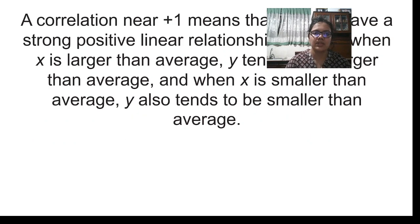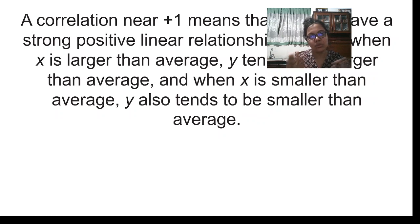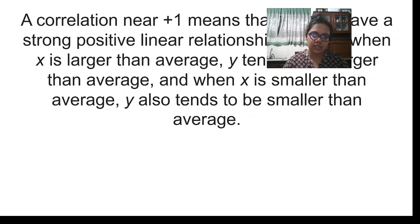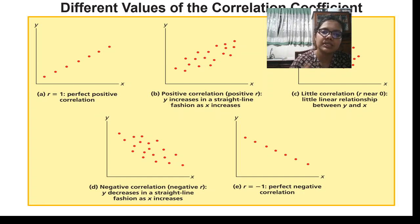Always the correlation coefficient has to be between minus one and plus one. A correlation near plus one means that X and Y have a strong positive relationship. If the value is more closer towards plus one, that means you have a positive linear relationship. If the value is more towards minus one, it means you have a negative linear relationship. Based on the value you are getting, you can determine what kind of relationship exists. You can also use a scatter diagram to graphically represent the relationship between two variables.